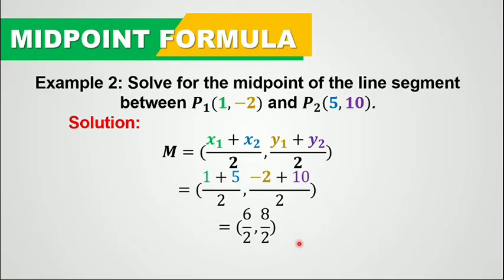1 plus 5 is 6 over 2, which is simply 3. And negative 2 plus 10 is 8 over 2, which is simply 4. Therefore, the midpoint of the line segment has coordinates 3 and 4.